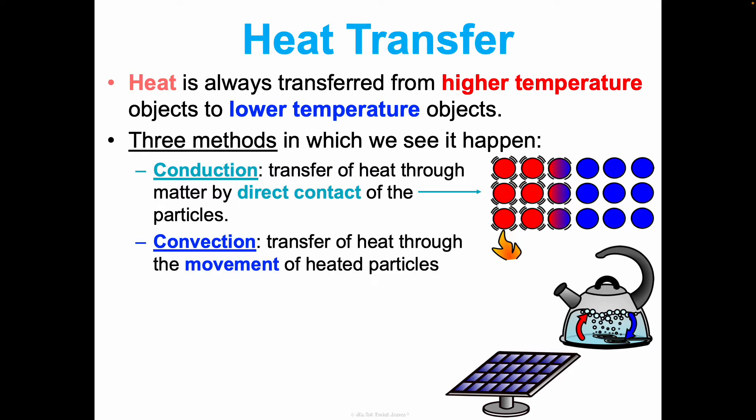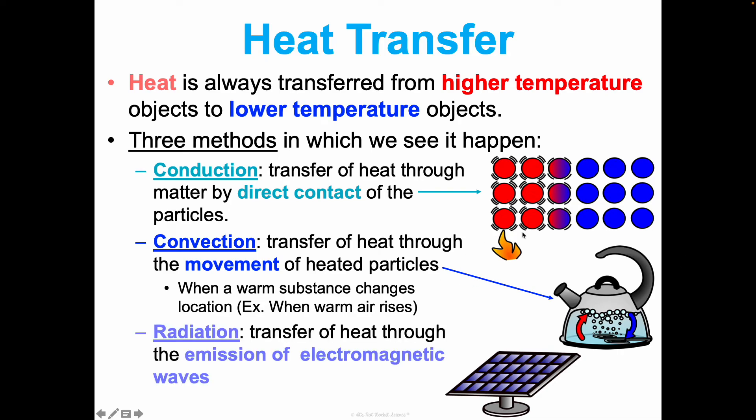Convection is a transfer of heat through the movement of heated particles. We see this when you're boiling water and how the heat in the water starts to move through the water. This is when a warm substance changes location. Think about when warm air rises. I don't know if you've ever been in a two-story house. We're currently renting a two-story house and it's always warmer on the second floor because the heat from the first floor naturally rises up to the second floor. It's that movement of heated particles. And then radiation, you may remember, we mentioned this back in Unit 3 electrons. It's the transfer of heat through the emission of electromagnetic waves. I have a picture here of a solar panel. It carries energy from sources like the sun and can capture it there. So that's radiation. That's just a few of the different ways that we can see this heat transfer, this Q happens.